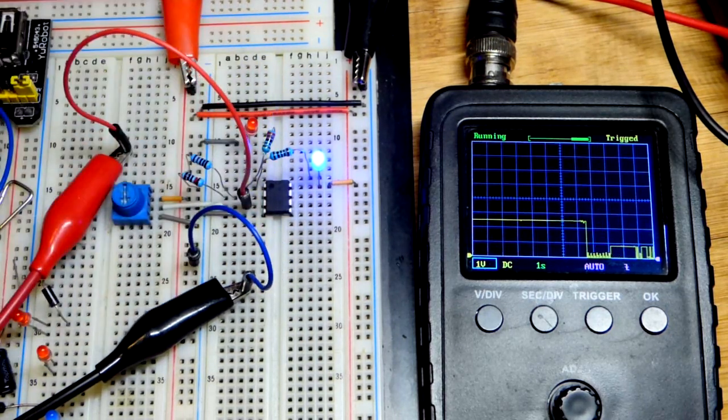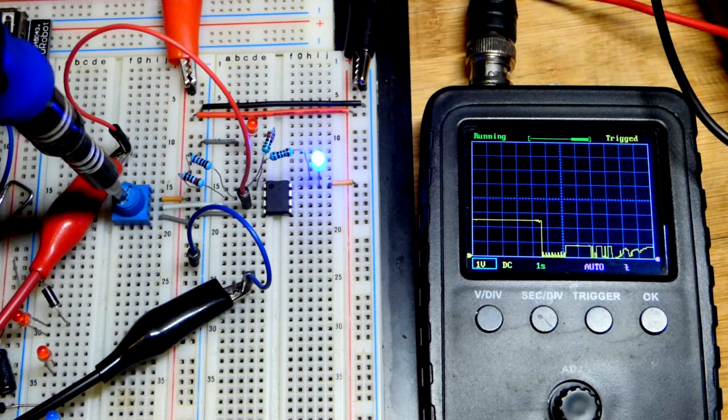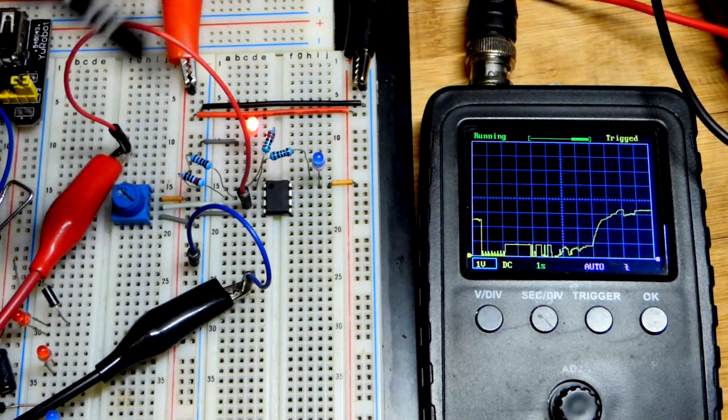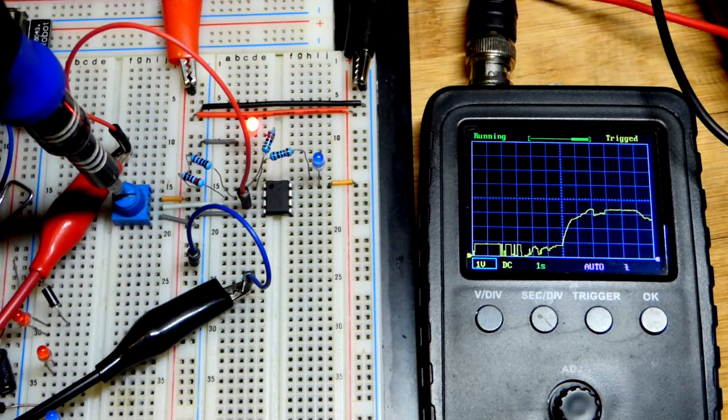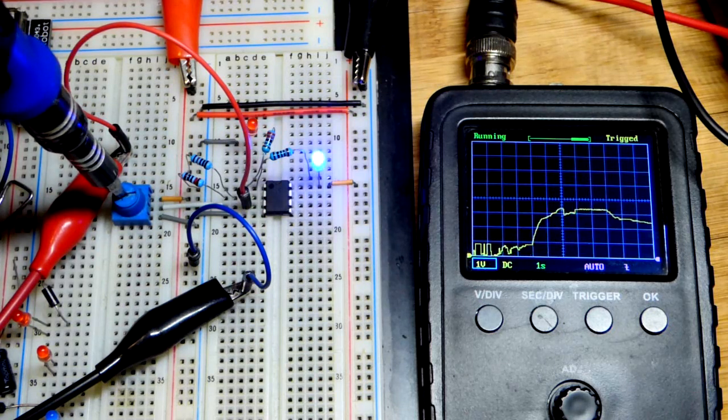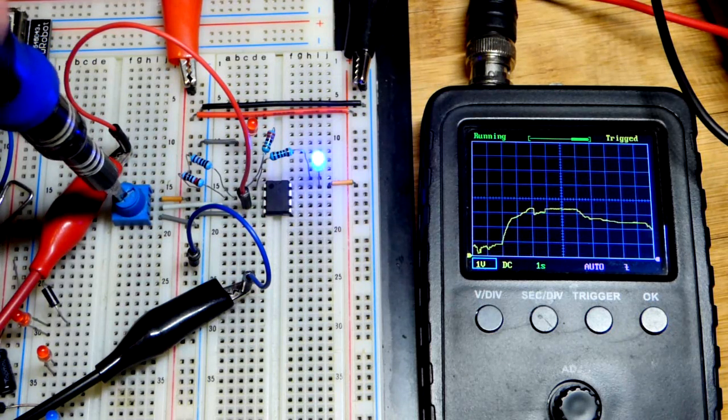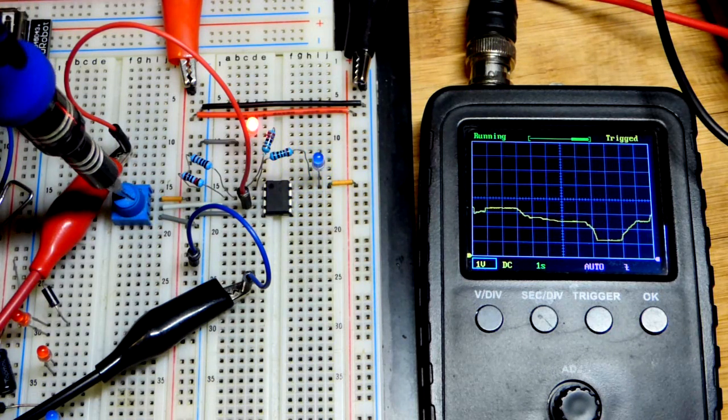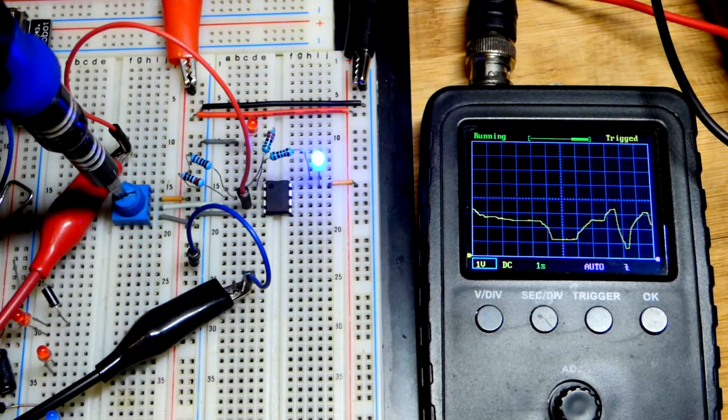There you can see we're below 2.5 volts. If I turn the trim pot, so that we get above 2.5 volts, the red LED lights up. I'll go back down to 2.5, can be anything above 2.5, anything below 2.5 blue LED, anything above red LED. As you can see right there, the halfway point.